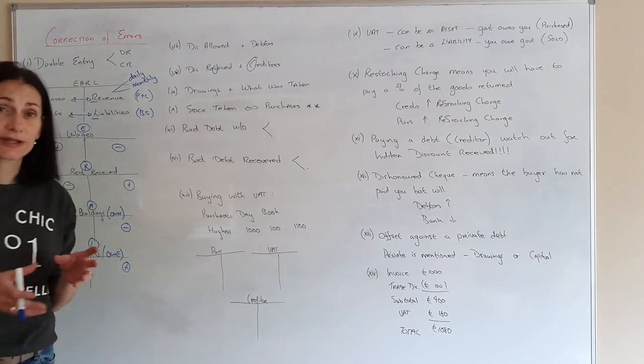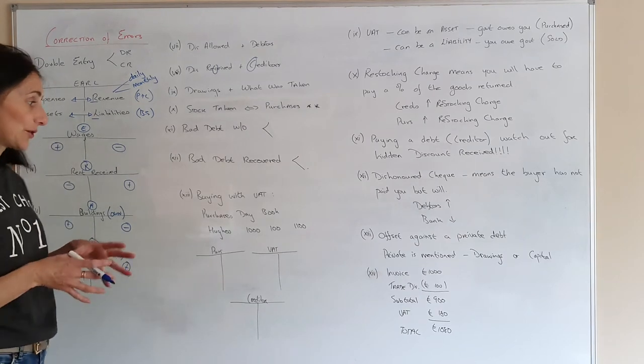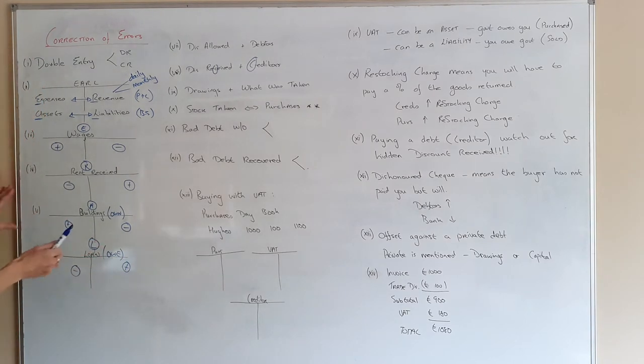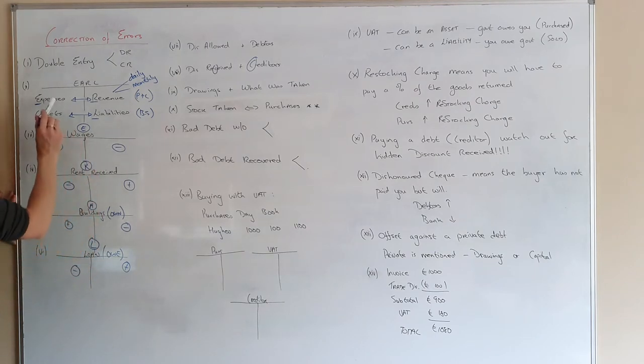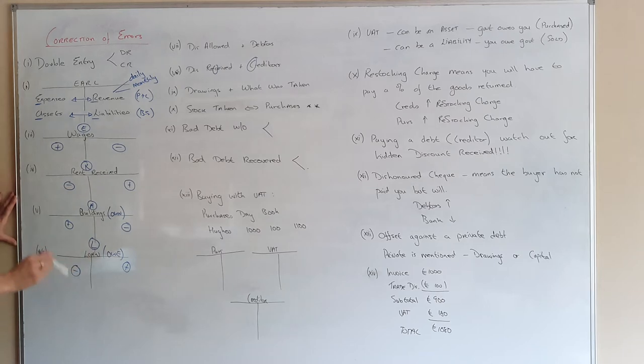So the first key thing, you're going to see this in the next video where I'm going to go through some of these. The first thing I'm going to be doing is I'm going to figure out which accounts I need to open. The second thing I'm going to figure out is which part of EARL it is. And the third thing I'm going to always figure out is which side of which account it should be on.